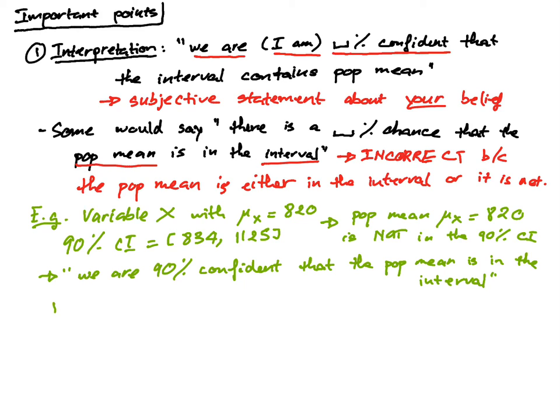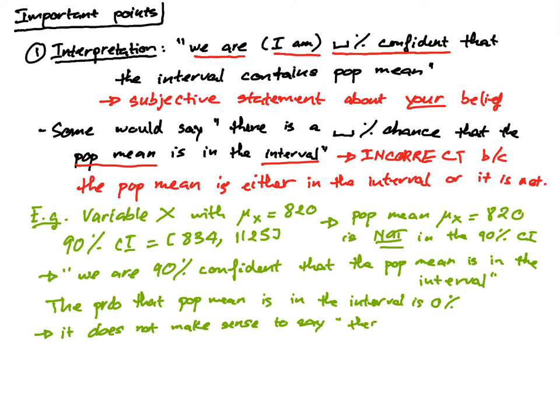But in this case, the probability that the population mean is in the interval is 0%, right? It is not in the interval. And so it does not make sense to say that there is a 90% chance the population mean is in the interval from 834 to 1125.